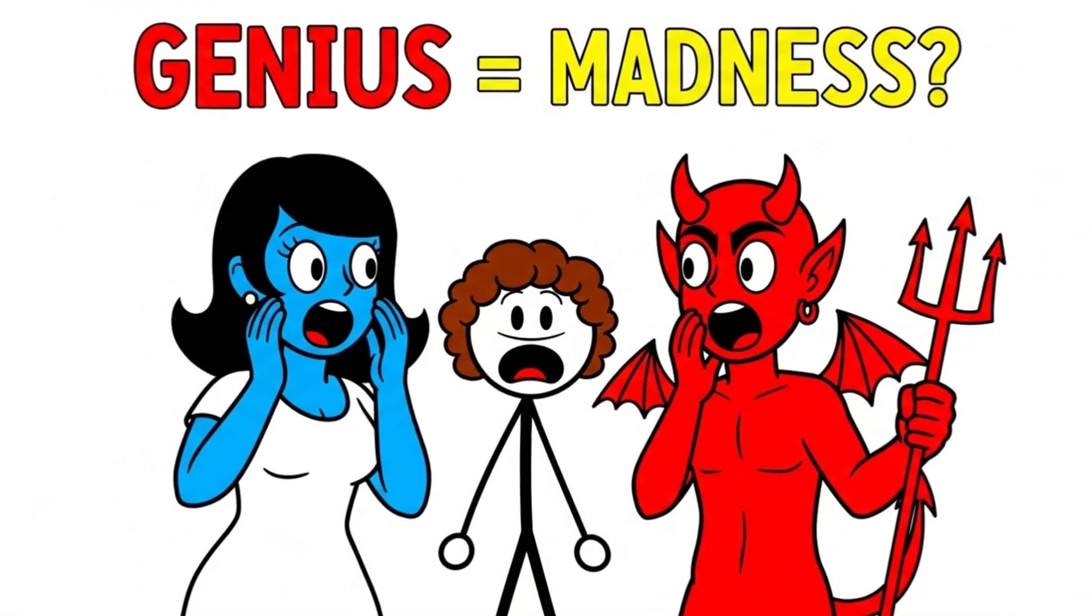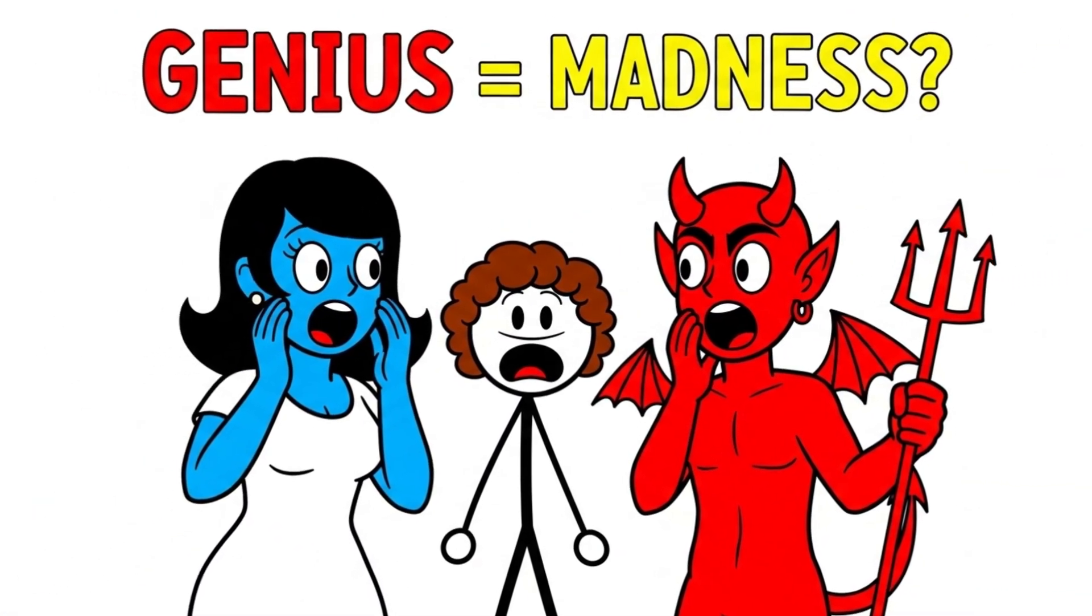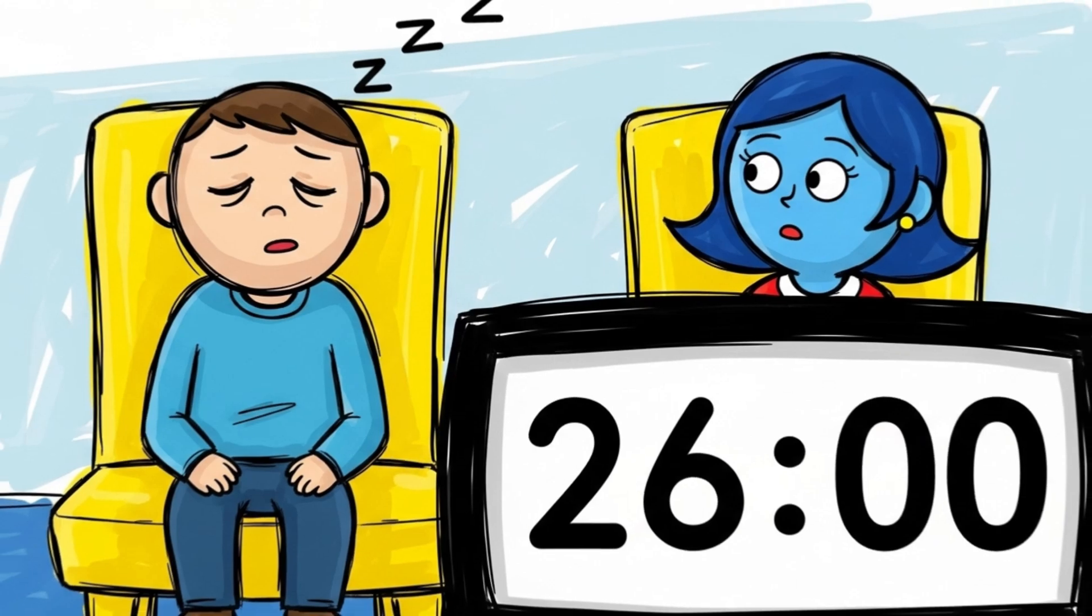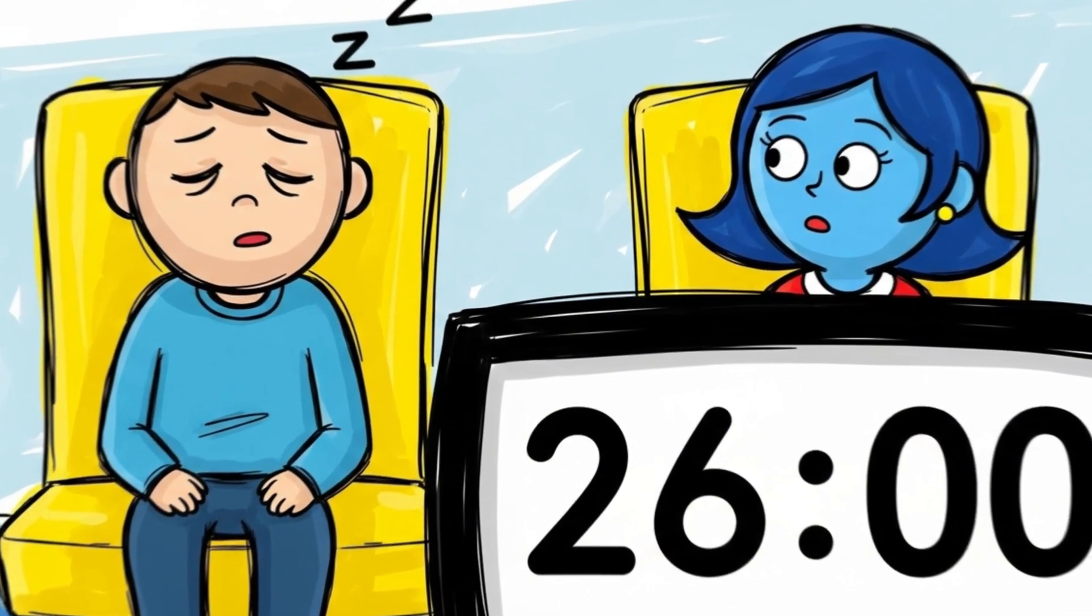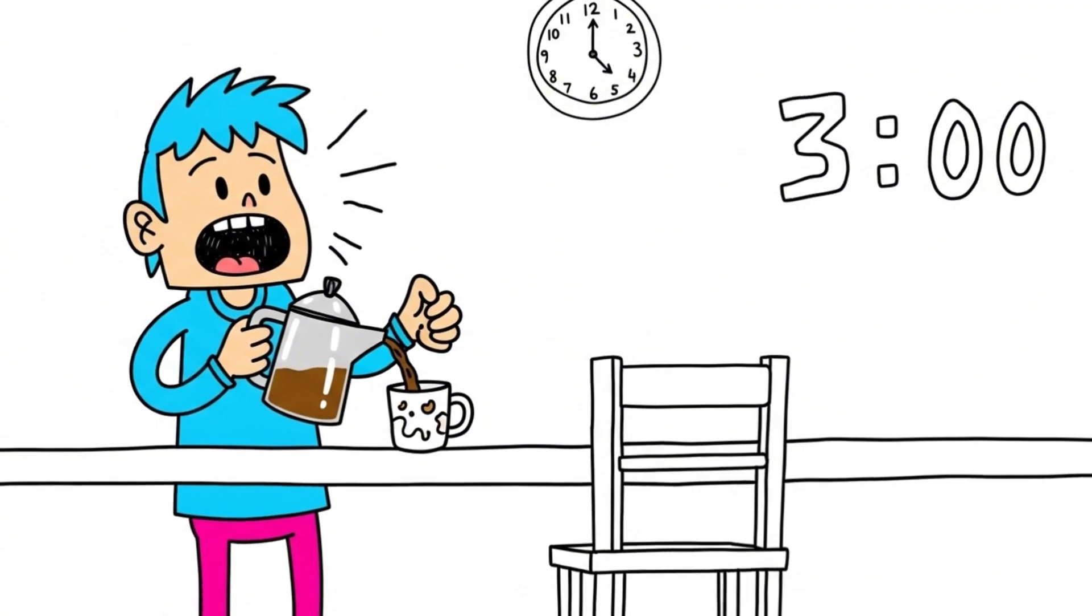Let's get right into it. They say genius is next to madness, but no one told you madness could involve sleeping in a chair for exactly 26 minutes or talking to an invisible audience while making coffee at 3 a.m.